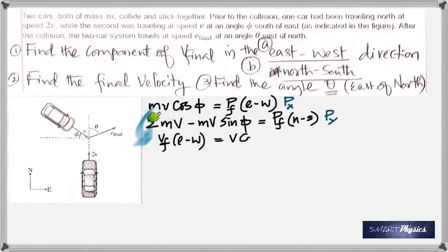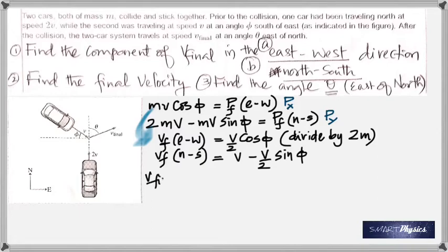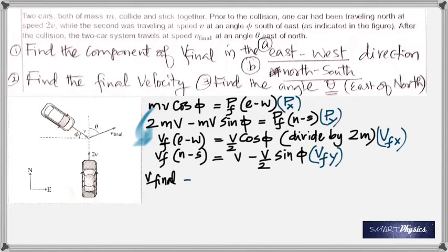Dividing the east-west momentum by 2m gives v_final_x = v cos φ / 2. Dividing the north-south momentum by 2m gives v_final_y = v minus (v/2) sin φ. Now to find the final speed, since we have two components at right angles, we square them, add them, and take the square root.